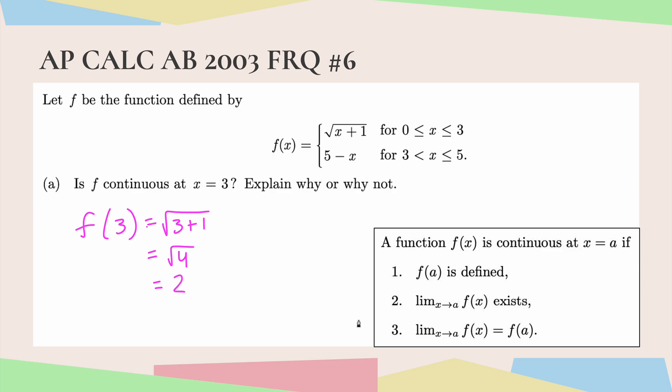Now our goal is to look at the limit from the right and the limit from the left to make sure that both of those also equal 2. The limit as x approaches 3 from the right, we're coming from these larger values, so we're going to be using this function here. We can just use direct substitution. 5 minus 3 equals 2. So the limit from the right equals 2.